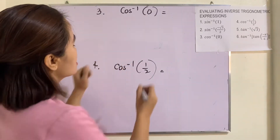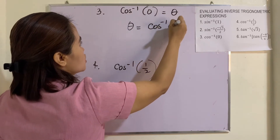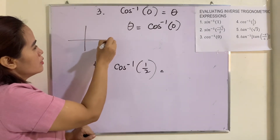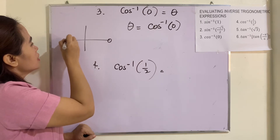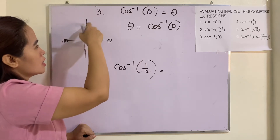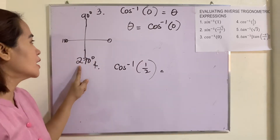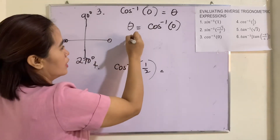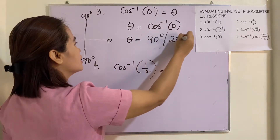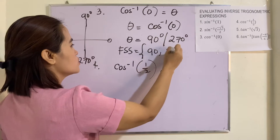Example 3: arc cosine of 0. We have to look for the value of the angle in which the cosine function is equal to 0. On the unit circle: at 0° cosine is 1, at 180° cosine is negative 1, and at 90° and 270° cosine is 0. So the value of theta is 90 degrees and 270 degrees. Therefore, the FSS is 90°, 270°.